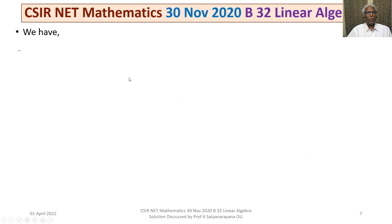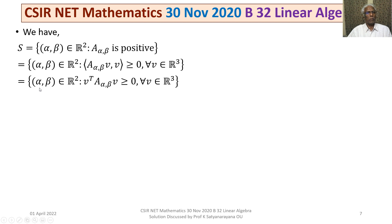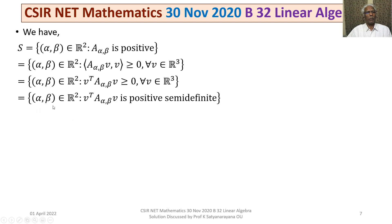Continuing, S is the set of all ordered pairs (α, β) in R² such that A(α,β) is positive — that is, such that ⟨A(α,β)·V, V⟩ ≥ 0 for all V in R³. This is equivalent to V^T · A(α,β) · V ≥ 0 for all V in R³, meaning the quadratic form V^T · A(α,β) · V is positive semi-definite.